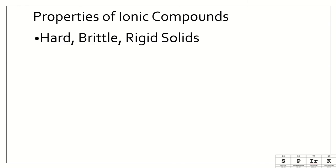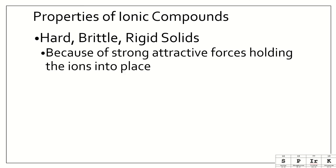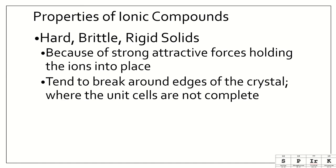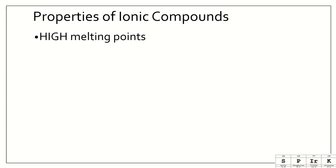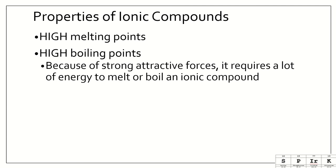Alright, so more properties of ionic compounds. They are hard, brittle, rigid solids, because of their strong attractive forces holding the ions into place. And they tend to break around the edges of the crystal, where those unit cells aren't complete. That's why crystals don't really crumble. They sort of shear off. They have very high melting points. They have very high boiling points. And this is because of their strong attractive forces. It requires a lot of energy to melt or boil them.